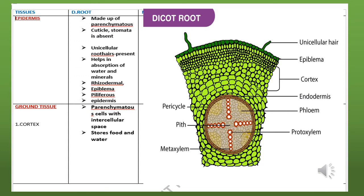Unicellular root hairs are present, and they help in absorption of water and minerals. Epidermis is otherwise called rhizoderma, epiblema, piliferous, or epidermis. Now let's move on to the second tissue — ground tissue.